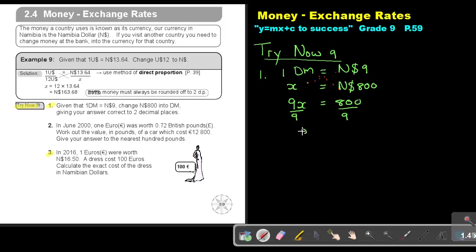Solve it. Divide 9 on both sides and you will get that the value of X is 88.89.